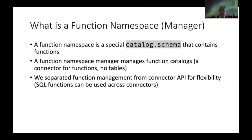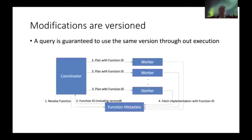This is how you write a SQL function — basically using the create function statement. To use the SQL function, you just refer to it by the fully qualified name in your query. Functions are versioned, so the coordinator after function resolution gets a function ID that refers to a specific version. Workers will always use the same version of the function for execution, even if the function definition changes while the query is running.